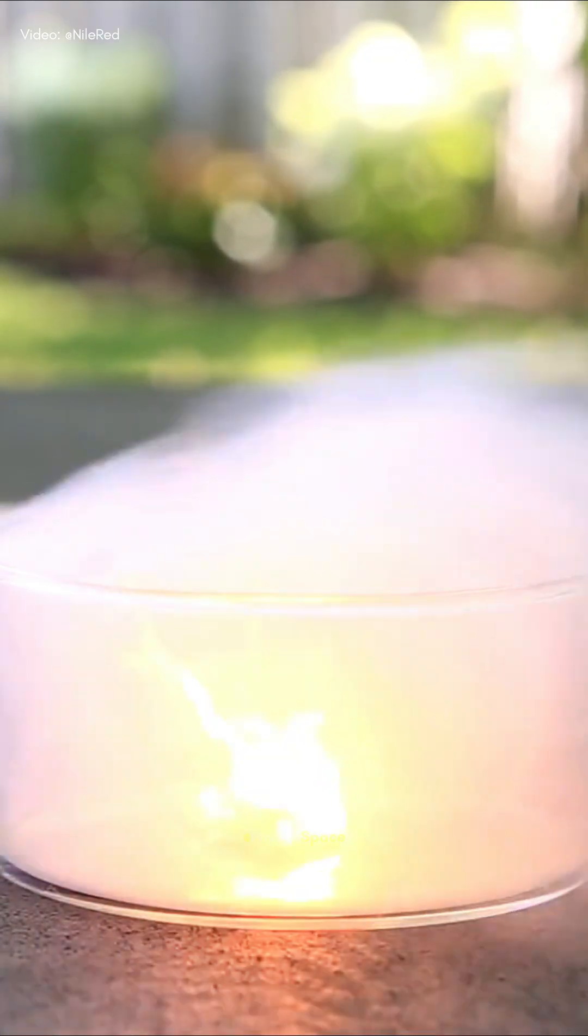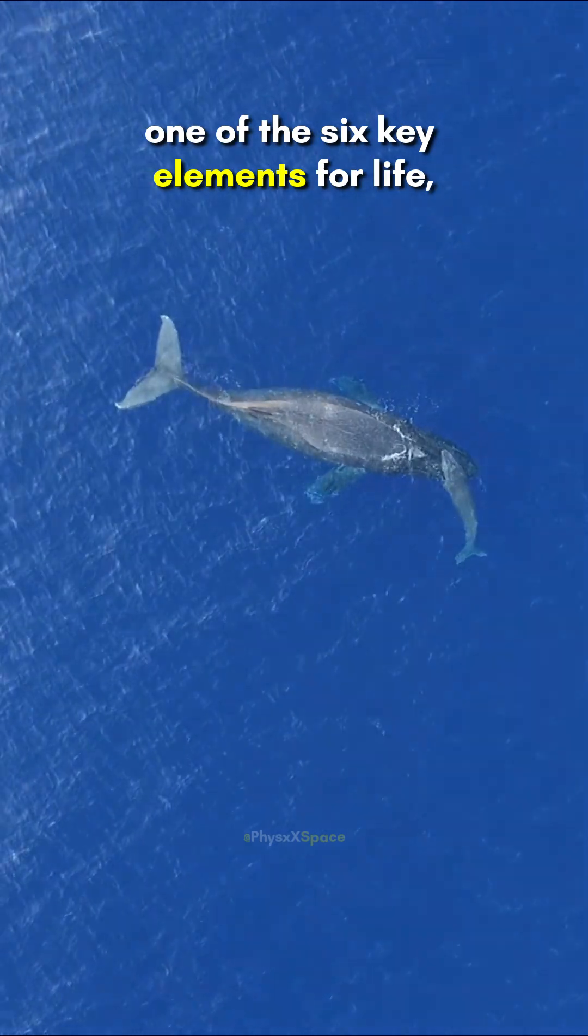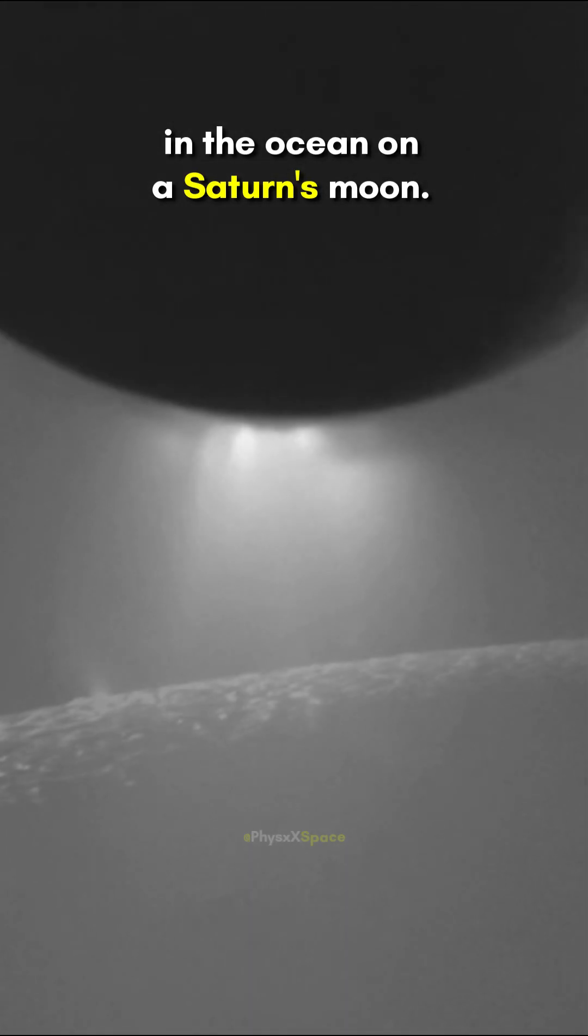Scientists just found phosphorus, one of the six key elements for life, in the ocean on a Saturn's moon.